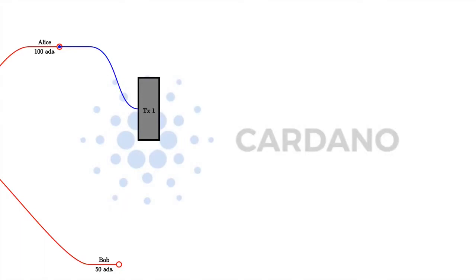Now she can create outputs for the transaction. She wants to pay 10 ADA to Bob, so one output will be 10 ADA to Bob. And then she wants her change back, so she creates a second output of 90 ADA to herself. This is how, even though you always have to consume complete UTXOs, you can get your change back. You consume the complete UTXO but then you create an output for the change.